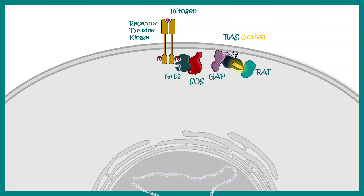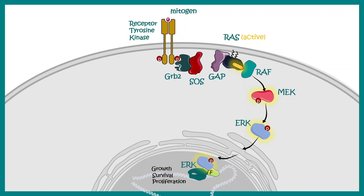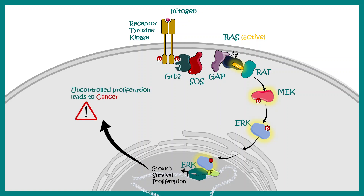As a result, the downstream effectors such as RAF, MEK, and ERK are all active, and the downstream pathway genes are constitutively transcribed. This leads to uncontrolled proliferation, which might lead to cancer. This is how the RAS MAP kinase pathway is responsible for cancer.